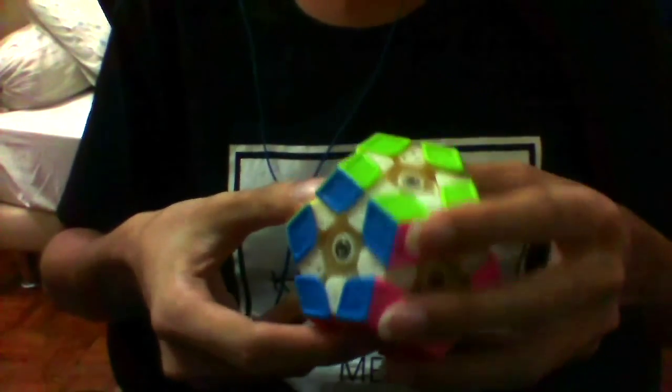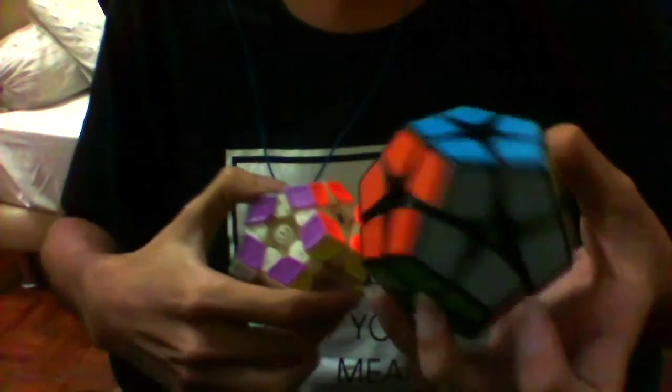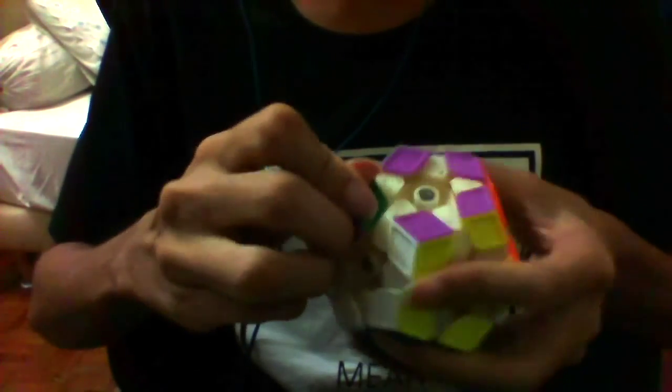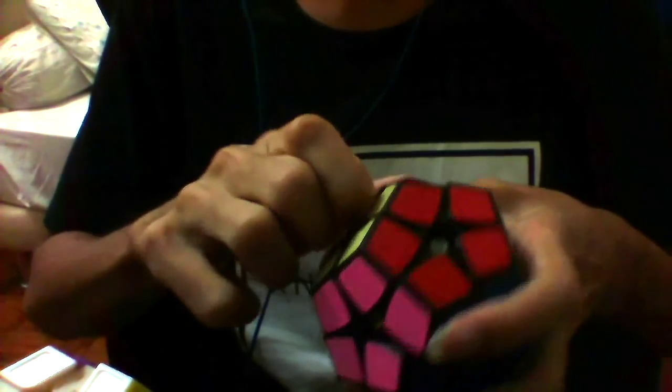Honestly, the galaxy makes for a better Kilominx than this actual Kilominx over here, and just about the only con of the galaxy is that corner twists can happen quite easily, whereas corner twists are basically impossible on the Shangshu Kilominx, provided that it's not too loose.